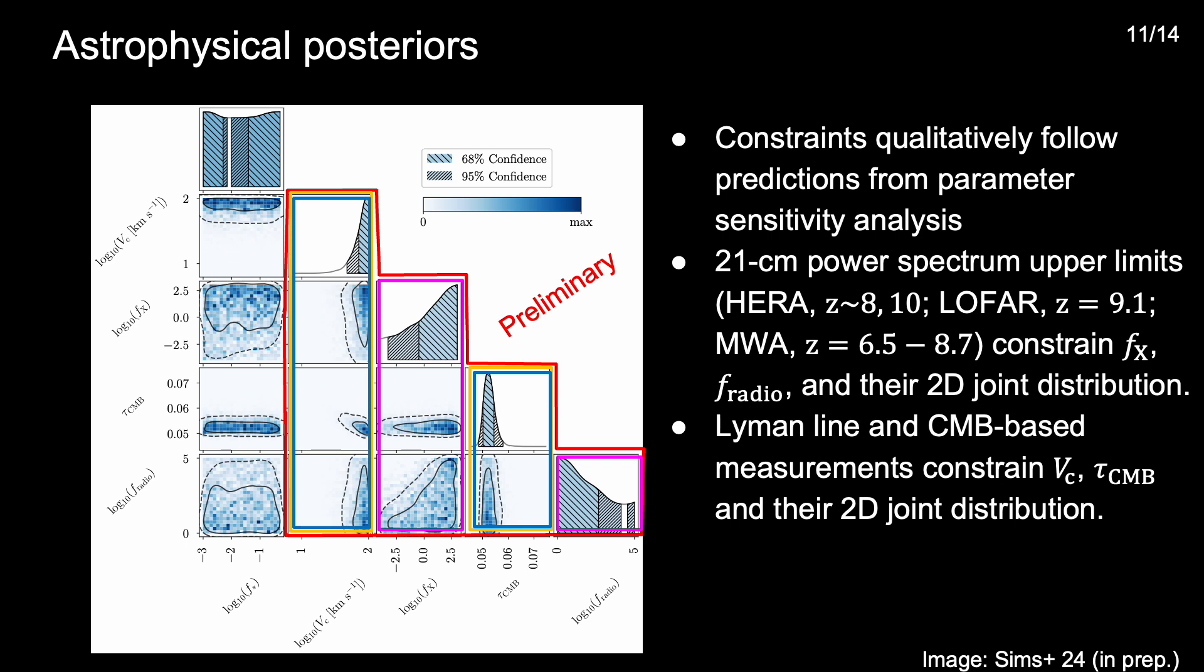The datasets that constrain the neutral fraction, in contrast, primarily improve the constraint on the CMB optical depth, which we actually constrain to approximately a factor of two more stringently than Planck data alone. As well as the minimum circular velocity of dark matter halos hosting star-forming galaxies, for which we find large values are preferred, implying rapid and late reionization driven by large galaxies.